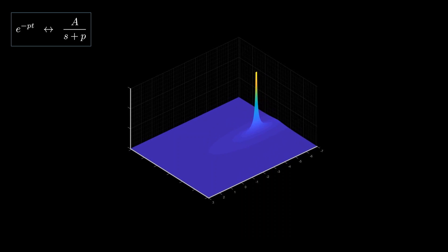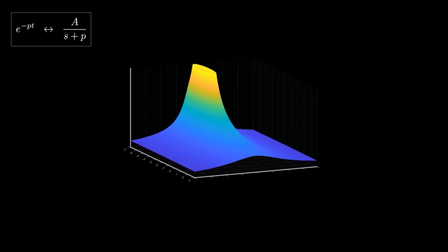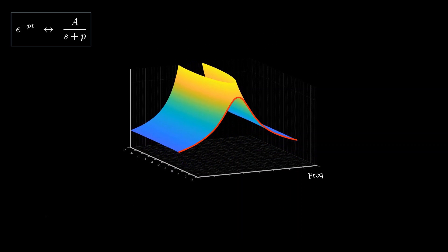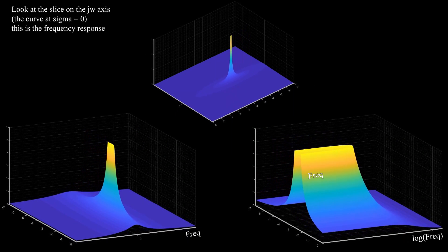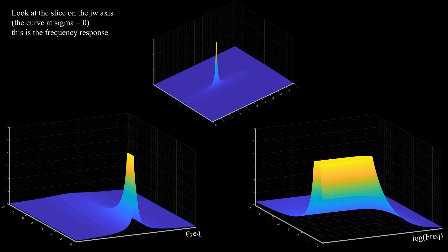Each pole has its own frequency response — the slice along the j omega axis. Frequency responses of all the poles are roughly the same shape, with small changes depending on the location and weight of each pole. For example, shifting the location of the pole changes the 3dB frequency — the frequency at which the frequency response is scaled by 1 over root 2. Setting the frequency axis to log scale makes this clear. The pole is a low-pass filter: it passes low frequencies and attenuates the higher ones.